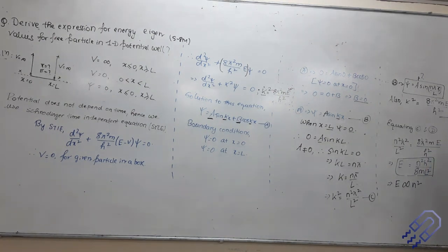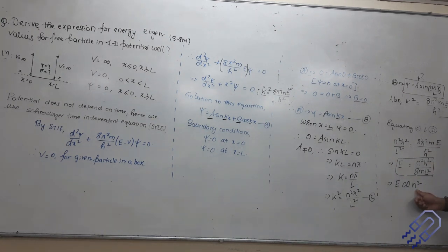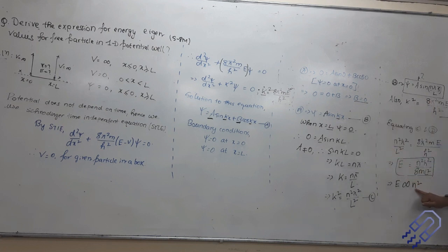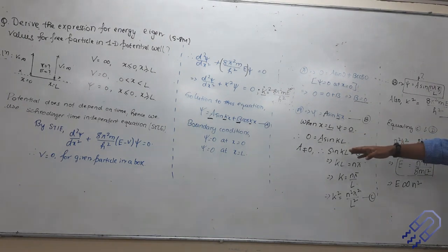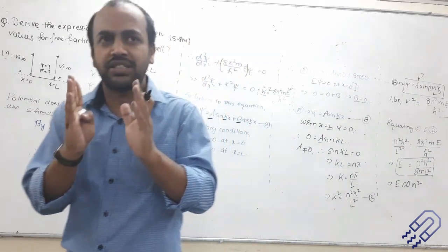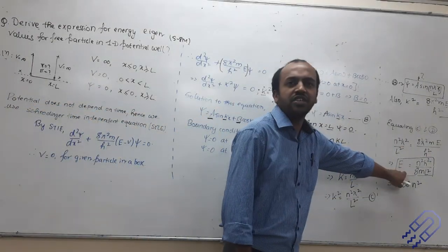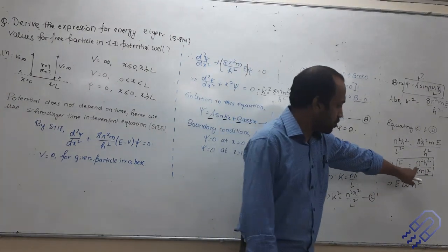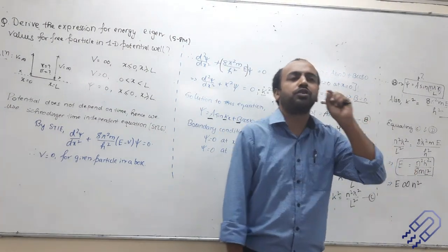A very interesting thing to note is that this energy is proportional to n². Mass of the electron is constant, width L is constant, h is constant — so energy depends on n². This tells us about discretization: energy depends on integer values of n. Can n be 0? No, because then energy would be zero. So n starts from 1, meaning n = 1, 2, 3, 4 and so on. This tells us that a particle confined within a very small closed space will definitely have some energy.